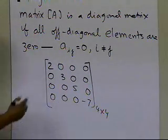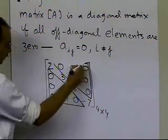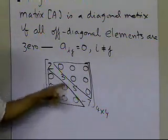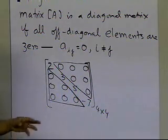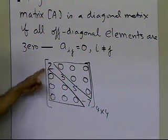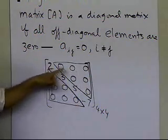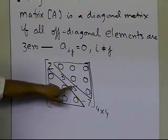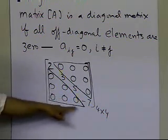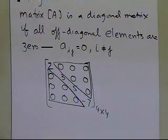All the off-diagonal elements are 0 — elements below the diagonal are 0, elements above the diagonal are 0. It doesn't matter what's on the diagonal; I could have a 0 there and it would still be a diagonal matrix. So if you look at any element off the diagonal, the row number is not the same as the column number — for example, third row first column, third row second column — and all those elements must be 0. Only then can I call that matrix diagonal.